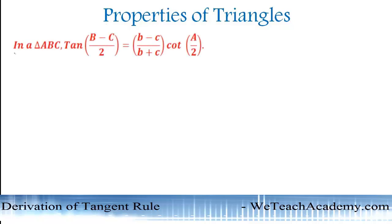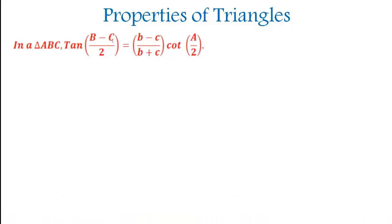The given statement is: in a triangle ABC, the value of tan of B minus C divided by 2 is equal to B minus C divided by B plus C times cot A by 2.